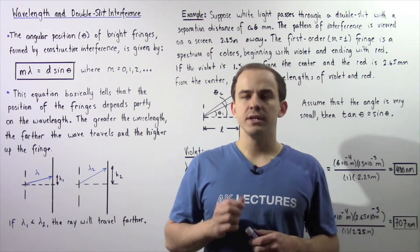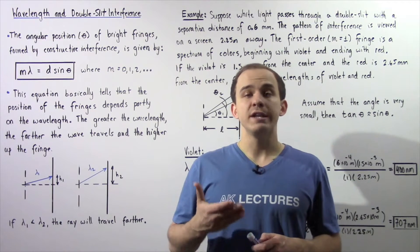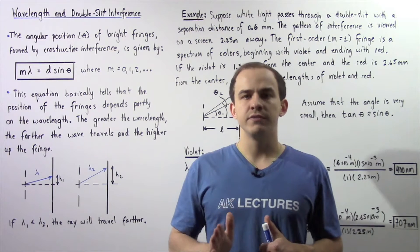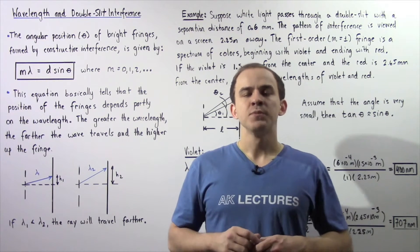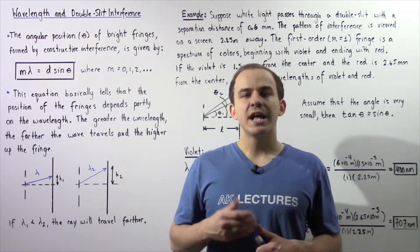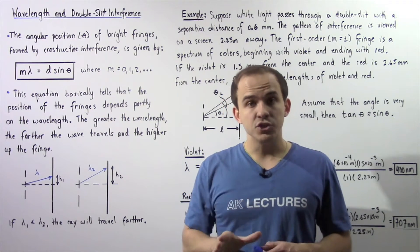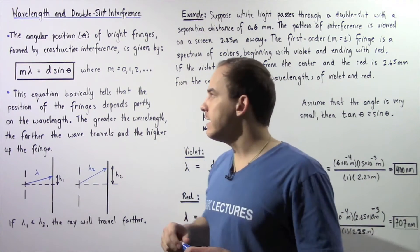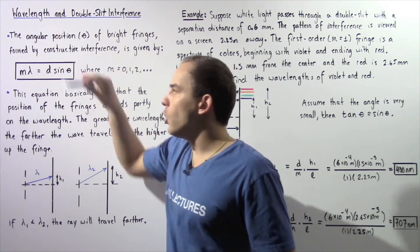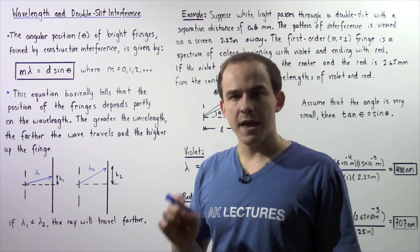In our discussion on the double slit experiment, we said that the bright lines or bright fringes on the screen are formed as a result of constructive interference of the waves that pass through those two slits. We also said that the angular position given by theta of the bright fringes on the screen is given by the following equation: m multiplied by lambda is equal to d multiplied by sin theta.